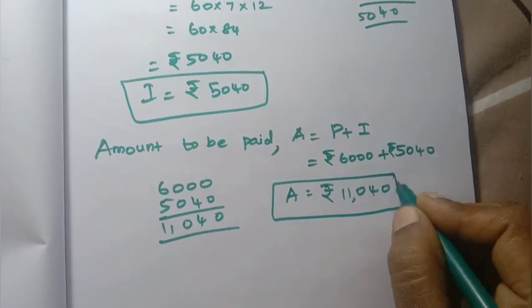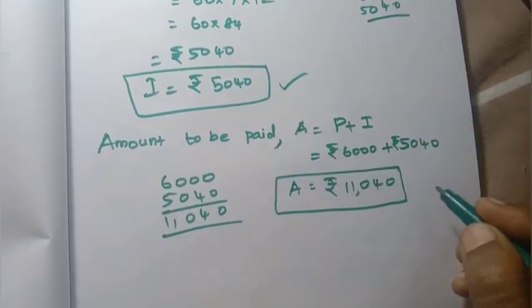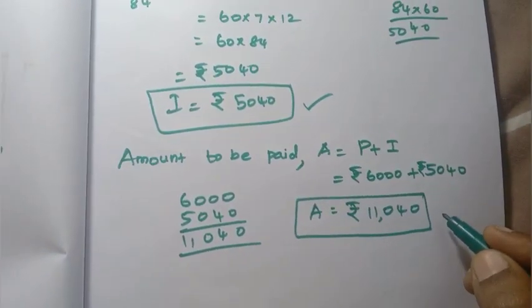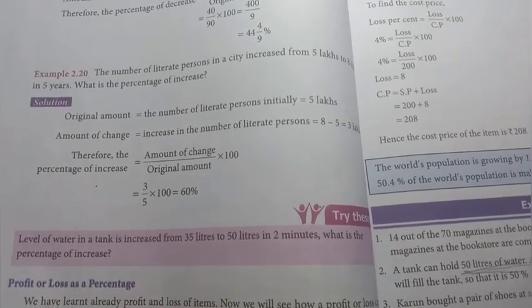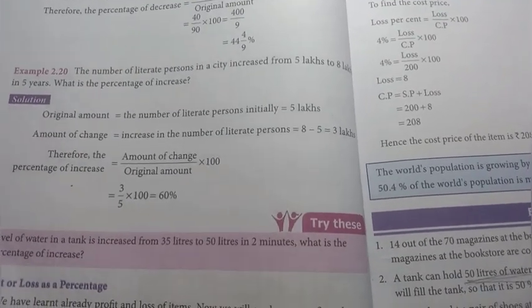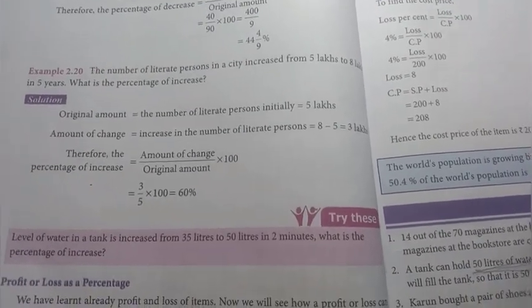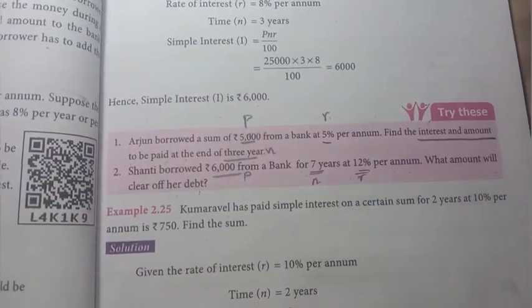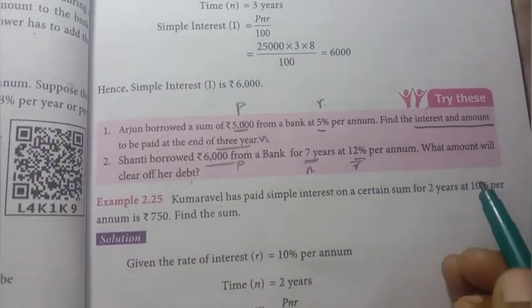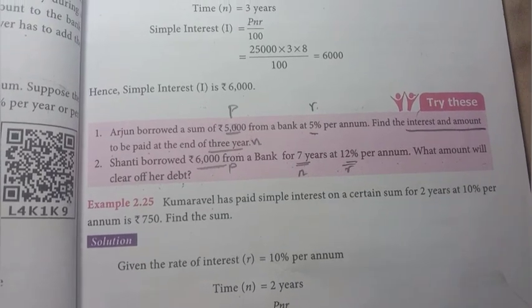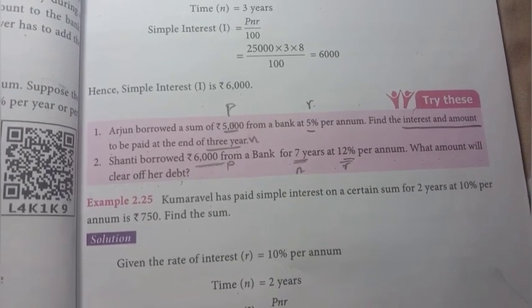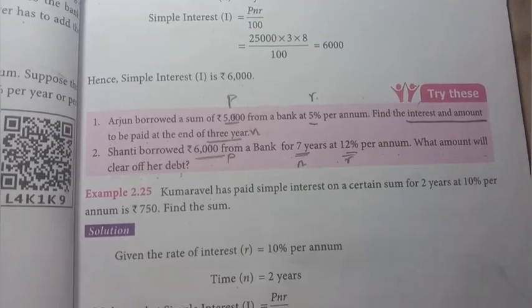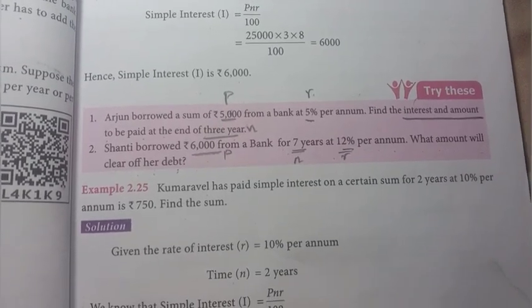So chapter 2 — in chapter 2 these are the overall try these problems. Part one and part two. In part two there are exercises 2.1 and 2.2. Remaining part two, try these chapter 2 problems are solved.